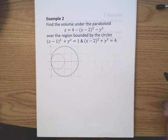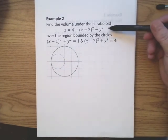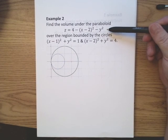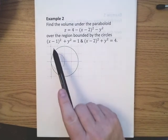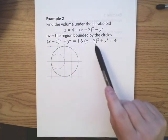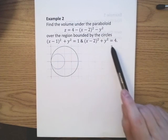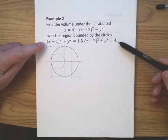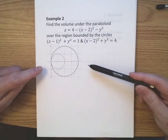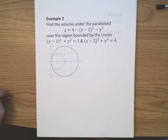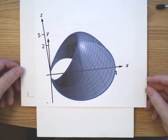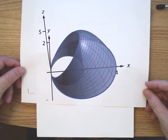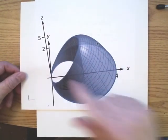Example two: find the volume under the paraboloid four minus the quantity x minus two squared minus y squared over the region bounded by two circles: x minus one squared plus y squared equals one, and x minus two squared plus y squared equals four. These circles can be graphed easily. The solid is a frowning paraboloid, and the region of integration is between these two circles.